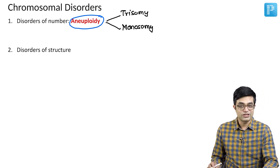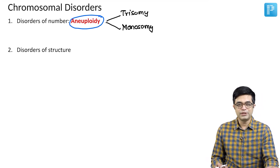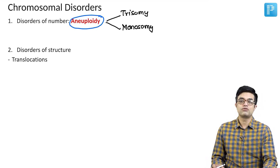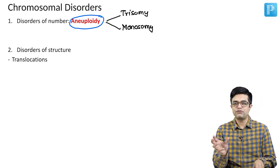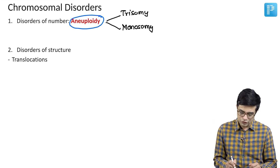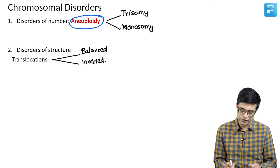Then you have disorders of the structure. In disorders of the structure, the overall number will be the same, but the individual structure can be changed. The first variety is translocations, which means shifting of the genetic material. There can be two types: balanced translocations and inverted translocations.